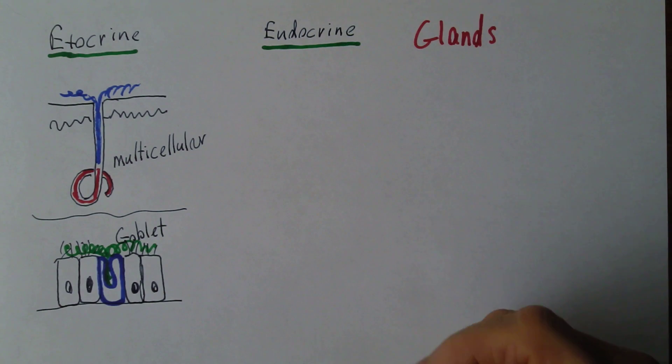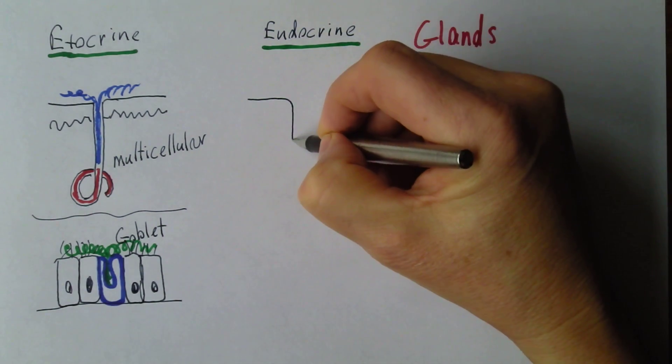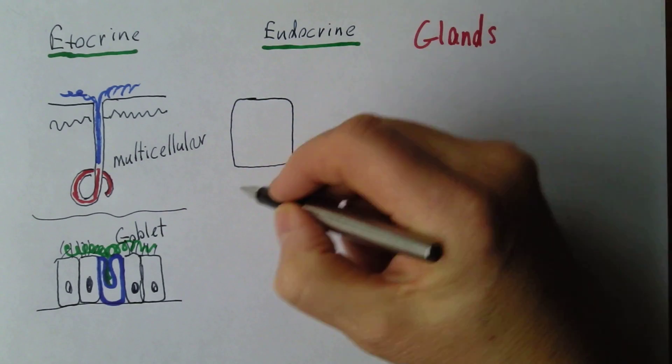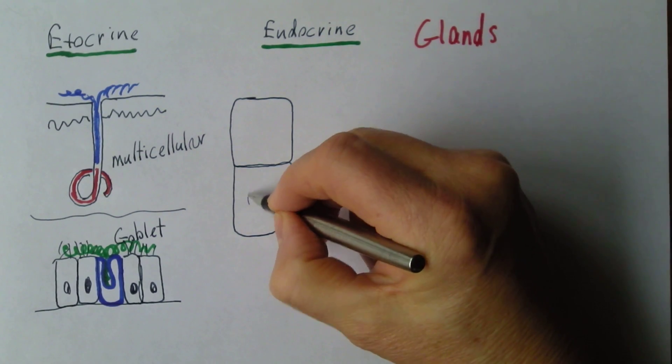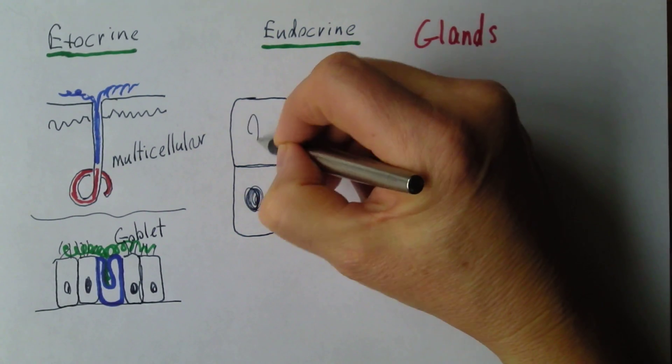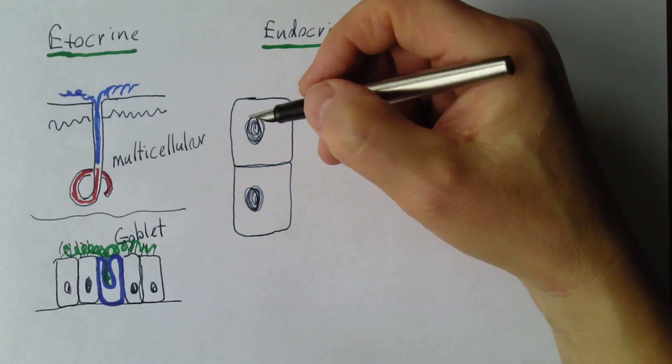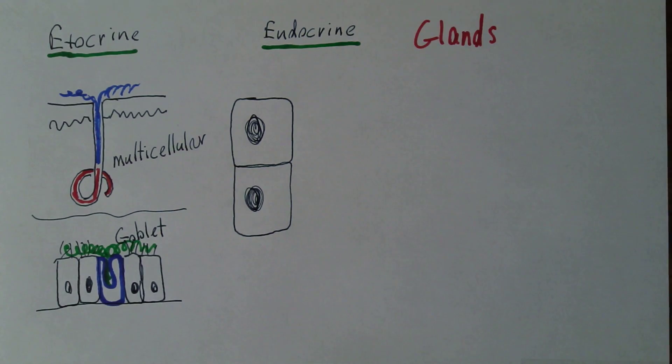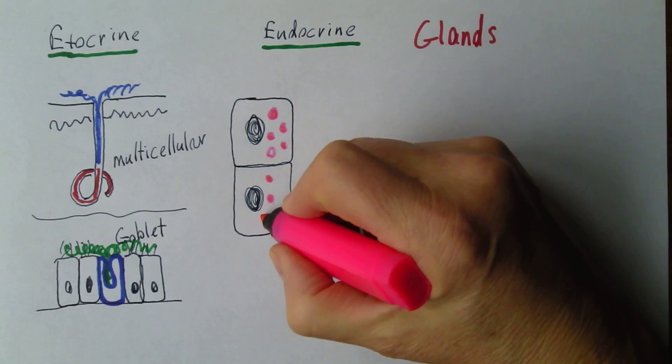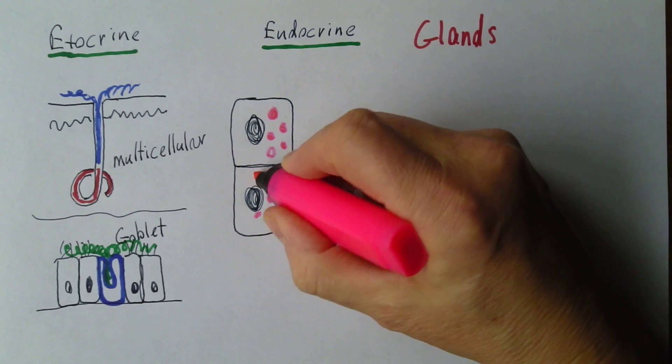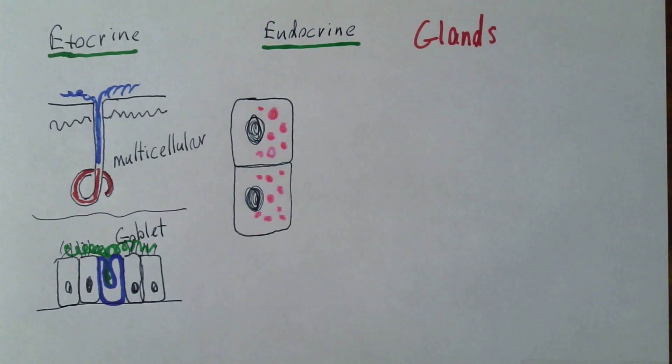Now endocrine glands are different. So if we have some endocrine cells here, imagine these are some endocrine cells in an endocrine gland. So these are endocrine cells. Now the key feature about endocrine glands is they produce some sort of endocrine product. So the endocrine glands are synthesizing endocrine product, pink in this case.